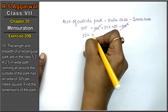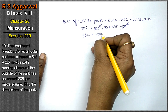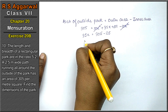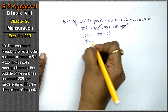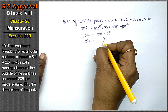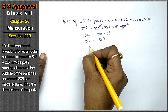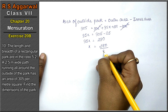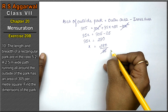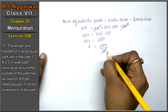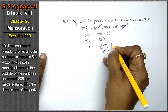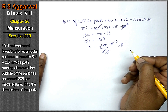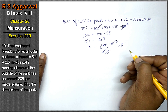So 35x + 25 = 305, which gives 35x = 305 minus 25 = 280. Therefore x = 280 divided by 35 = 8.